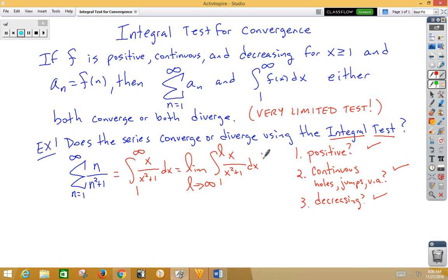Well, this is a u substitution, so u is x squared plus 1, du is 2x dx. So if we would like to put a 2 here, then we need to put a 1 half on the outside. So let me raise this up so we can have a little more space.